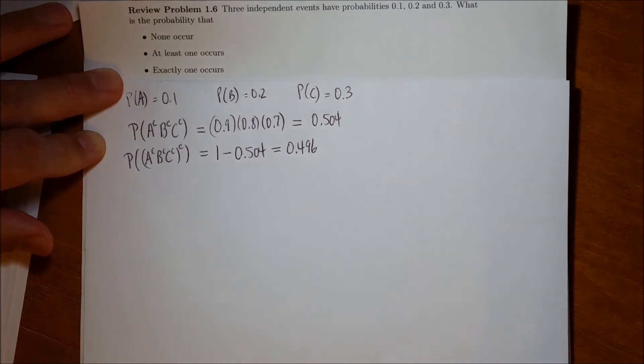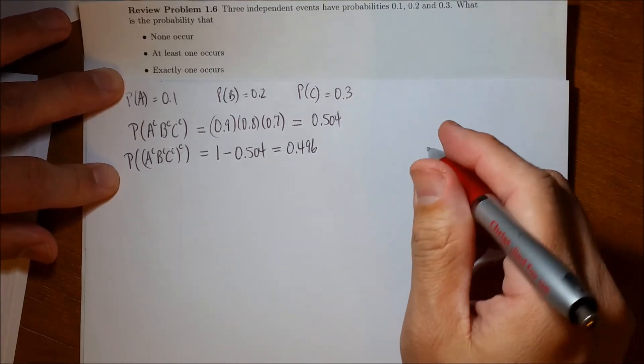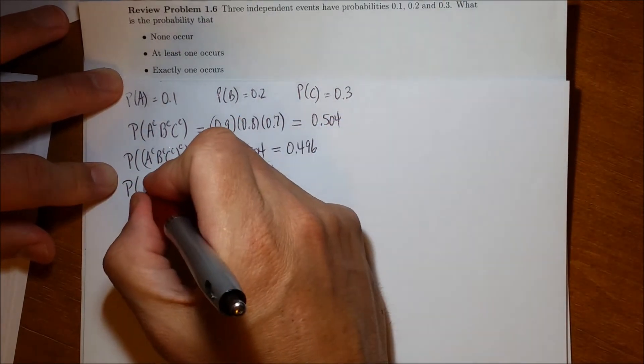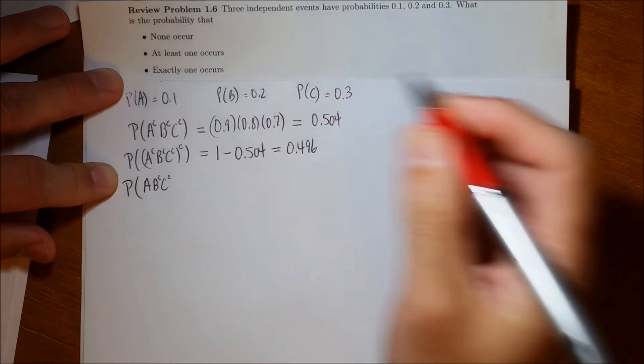Lastly, we want the probability that exactly one occurs. There's no particular shortcut for this one. I just have to list out the ways that could happen. The first one could occur, and the second one could not, and the third one could not. That's one way.